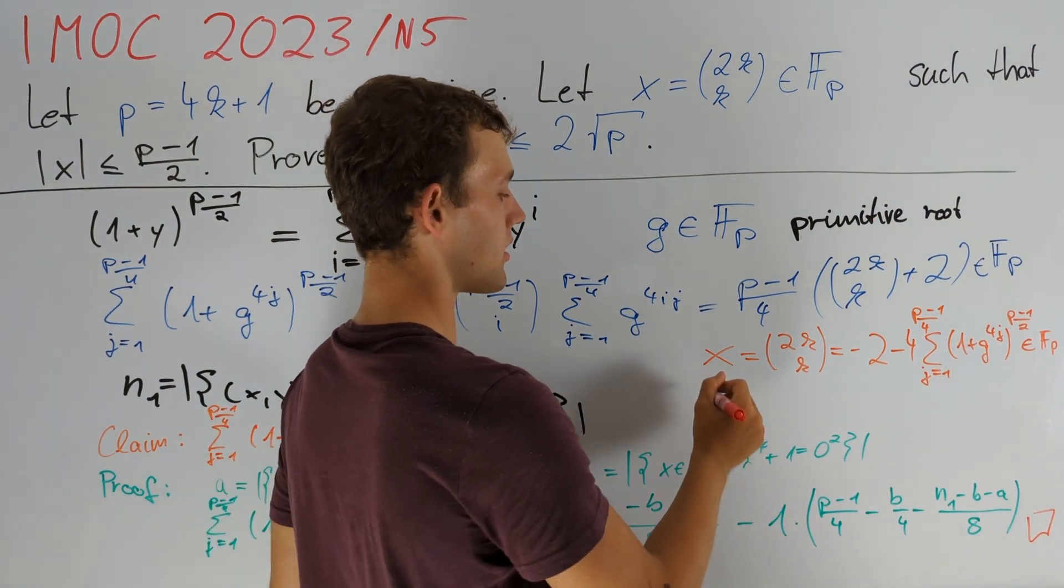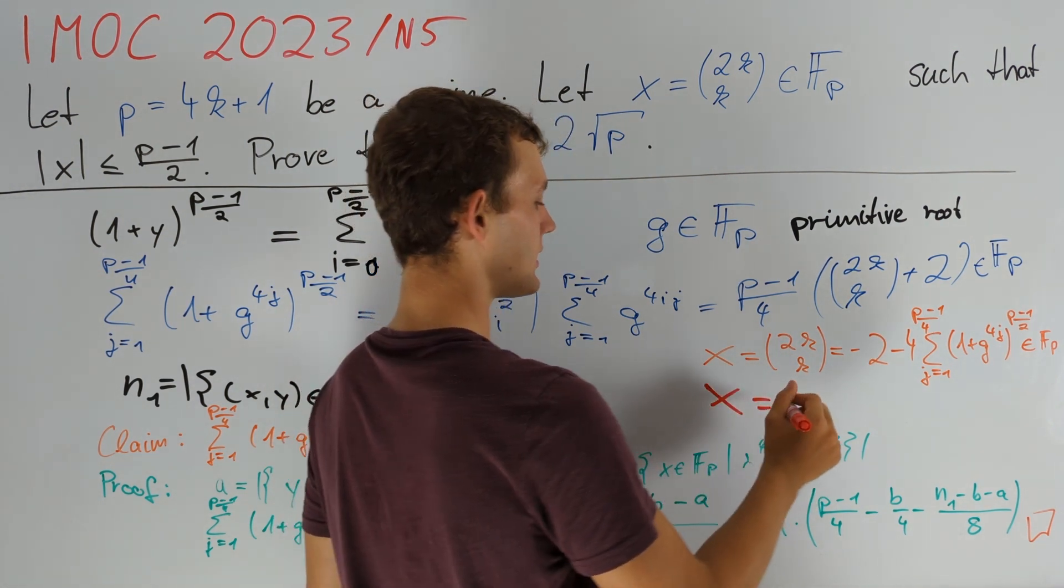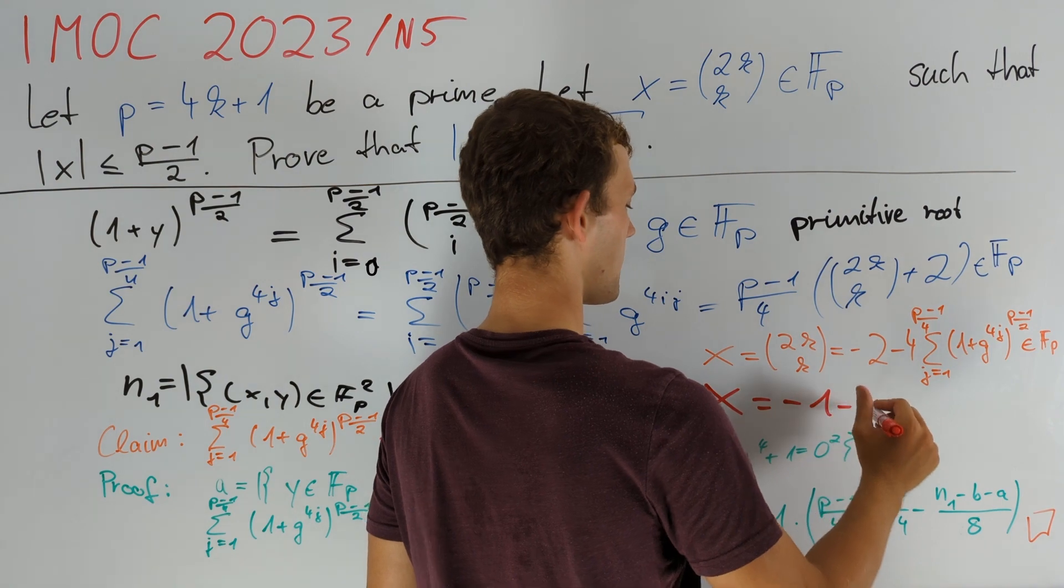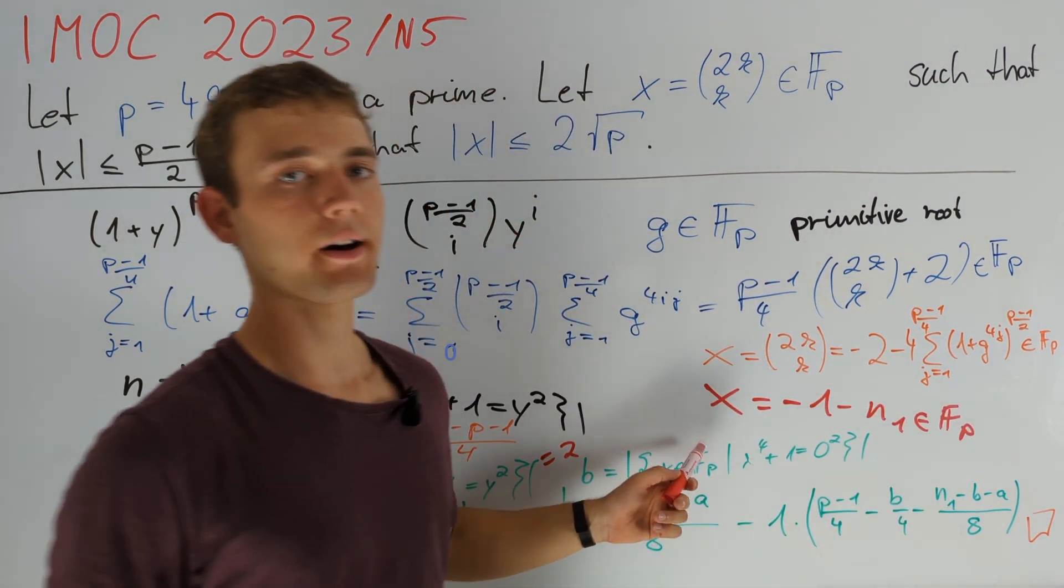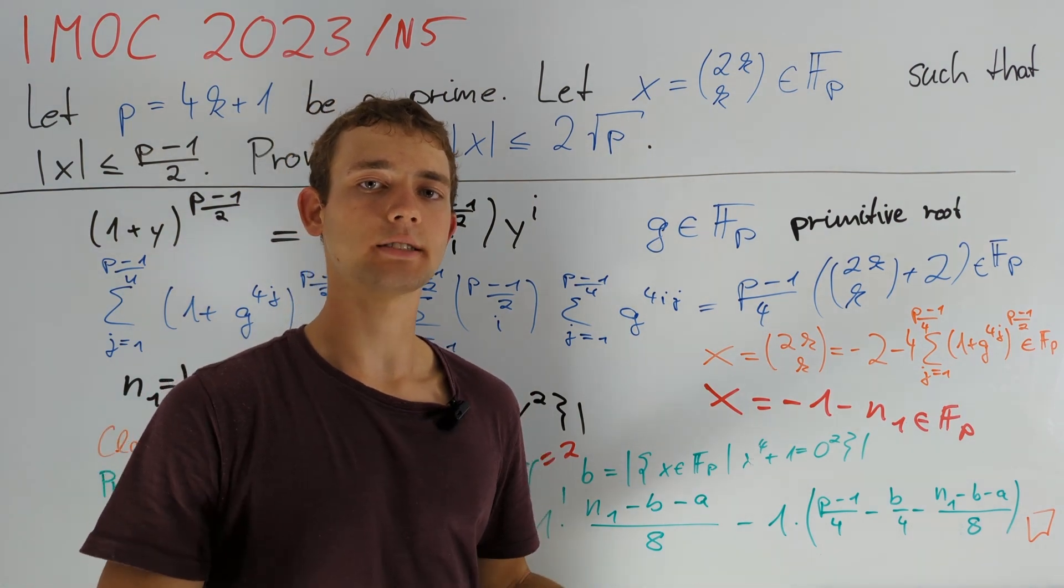We plug this value into our expression for x to finally obtain that x is equal to -1 - n1 in Fp. This is the final result of our first chapter. Can you finish the proof until my next video?